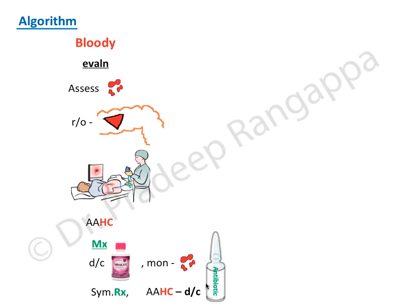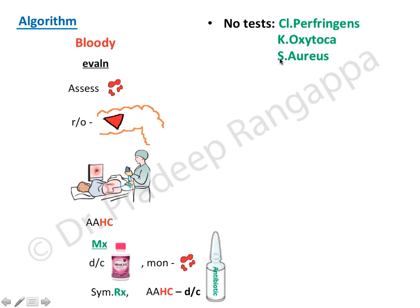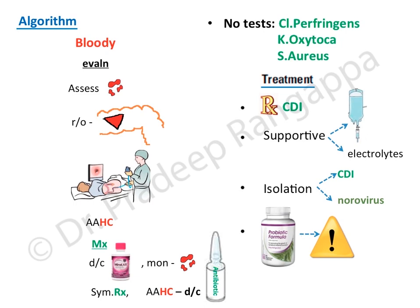Treatment for ICU diarrhea: start treatment for Clostridium difficile after sending stool tests to rule it out. Provide supportive therapy - fluids and correction of electrolytes including calcium, magnesium, and phosphorus. If Clostridium difficile or Norovirus is suspected, isolate the patient to prevent outbreaks. In immunocompromised patients, do not give probiotics as they may lead to overgrowth of organisms - probiotics should only be used in immunocompetent patients. Anti-diarrheal agents can be considered.